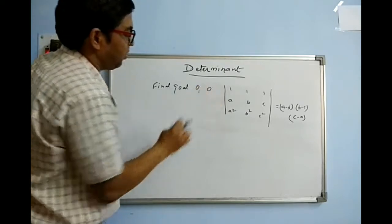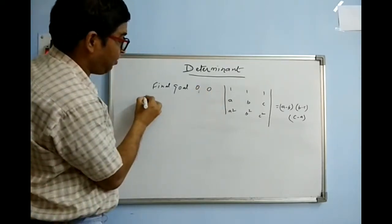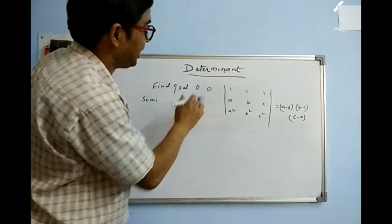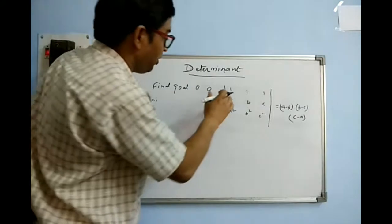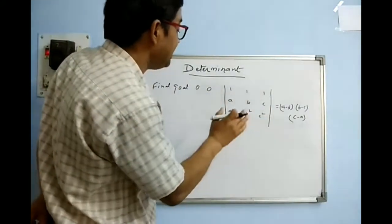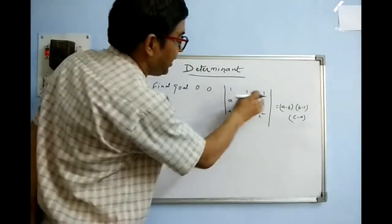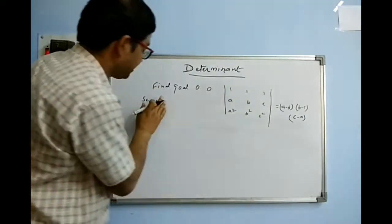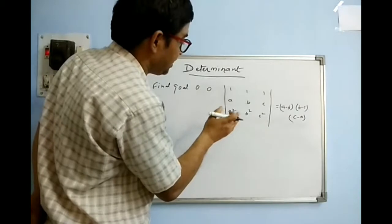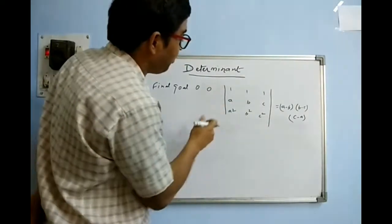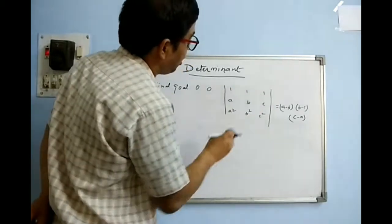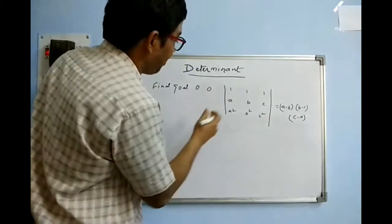The final goal is to bring 2 zeros. The semi-final goal: once you achieve it, you will certainly get 2 zeros. If you have triple 1 along any row or column, you can easily get 2 zeros. Luckily here triple 1 is present in R1, so we move directly to the final goal. We can also take anything common from any particular row or column.